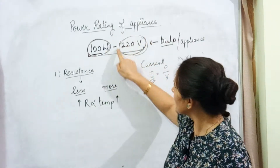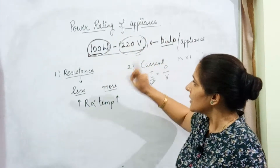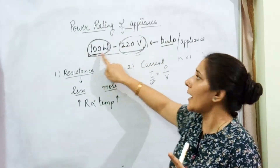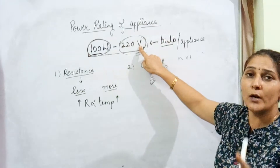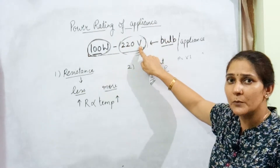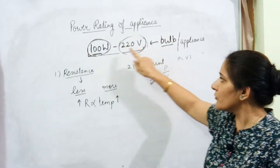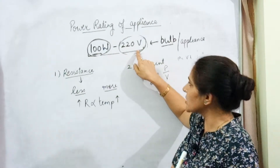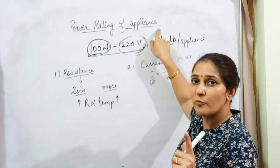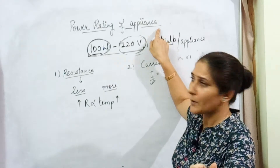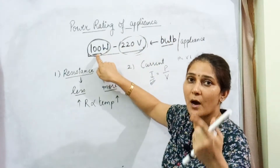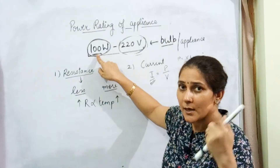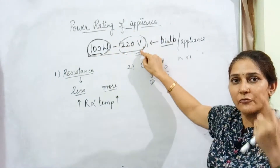The power of the appliance is 100 watt only when it is working at 220 volt. If the value of the potential difference changes, the value of power also changes. If the potential difference increases, the bulb will start glowing more brightly — meaning this power increases, and the power consumed by the appliance also increases.